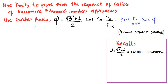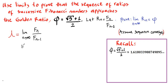We are given two successive Fibonacci numbers f sub n divided by f sub n minus 1, and the limit as n goes to infinity of this ratio approaches phi. Let this limit be equal to lambda. Using the properties of limits, we can also consider the limit as n goes to infinity of f sub n plus 1 divided by f sub n, and this is our limit lambda.